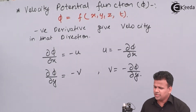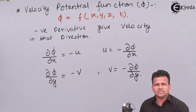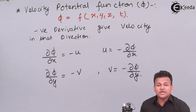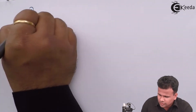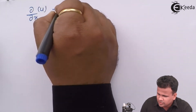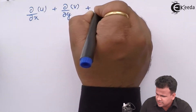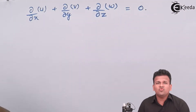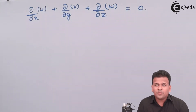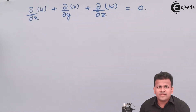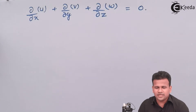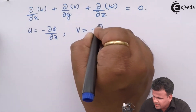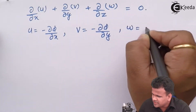Now, once we have defined this function, let us apply it in the continuity equation for an incompressible fluid flow. We already know the continuity equation for incompressible fluid flow: dou by dou x of u plus dou by dou y of v plus dou by dou z of w equals zero. Now, from the velocity potential function, u equals minus dou phi by dou x, v equals minus dou phi by dou y, and w equals minus dou phi by dou z.